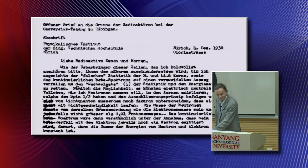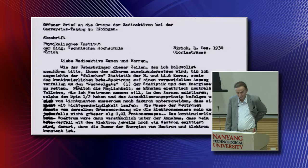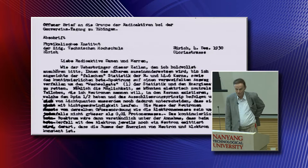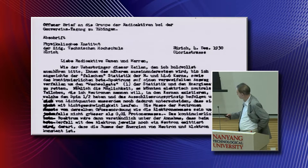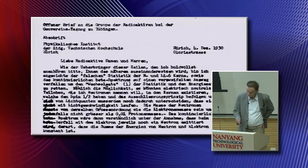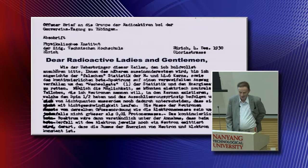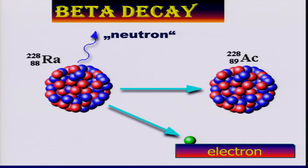He never published his idea. But he introduced it in a letter, which you see here in German, written to a conference in Tübingen on radioactivity. Pauli was invited but he couldn't come for some reason. In his letter, he called these particles a neutron. It has a funny title - here's my English translation: Dear Radioactive Ladies and Gentlemen. According to his idea, in this decay, also a neutral particle is emitted which takes away part of the energy and part of the momentum.